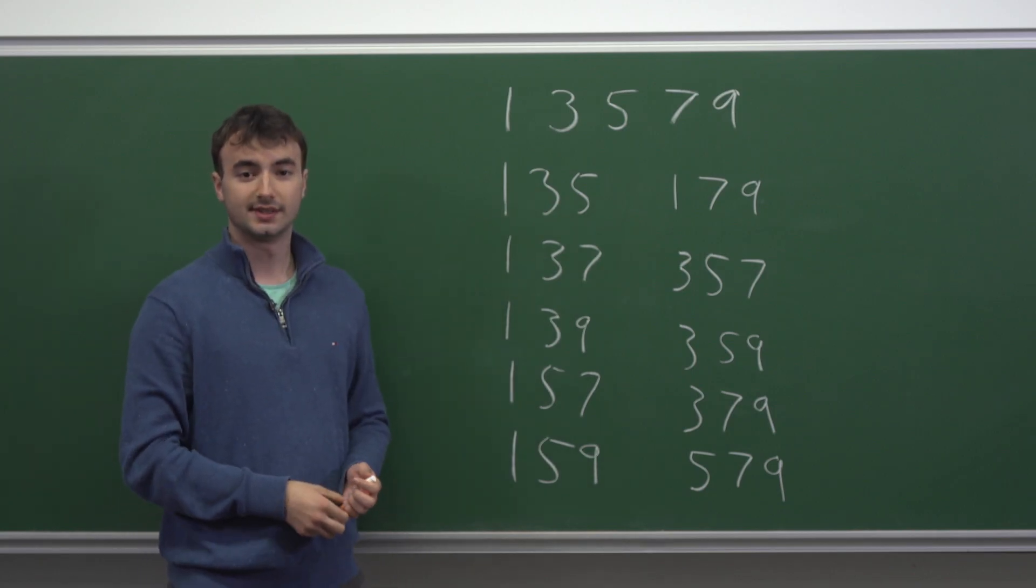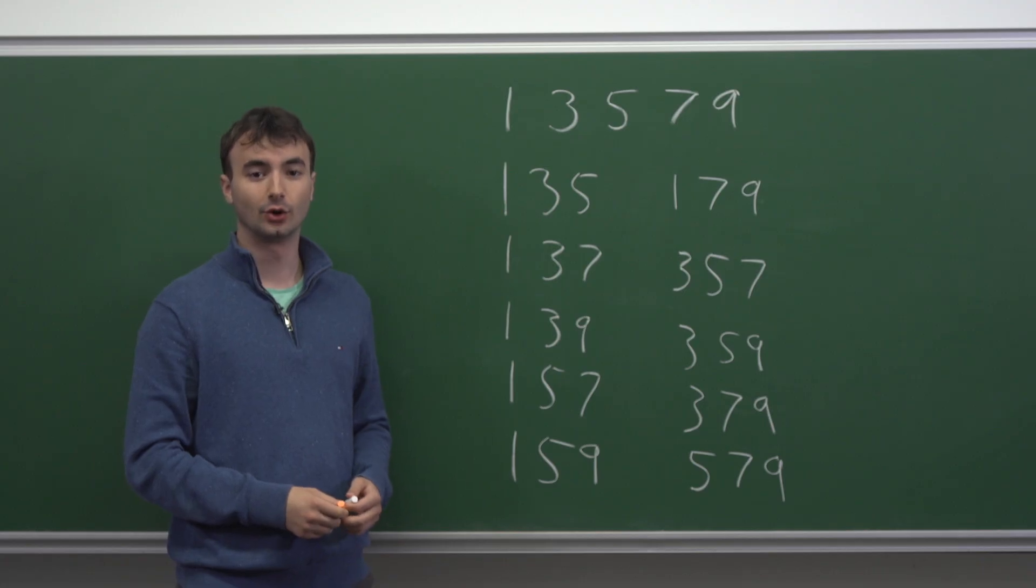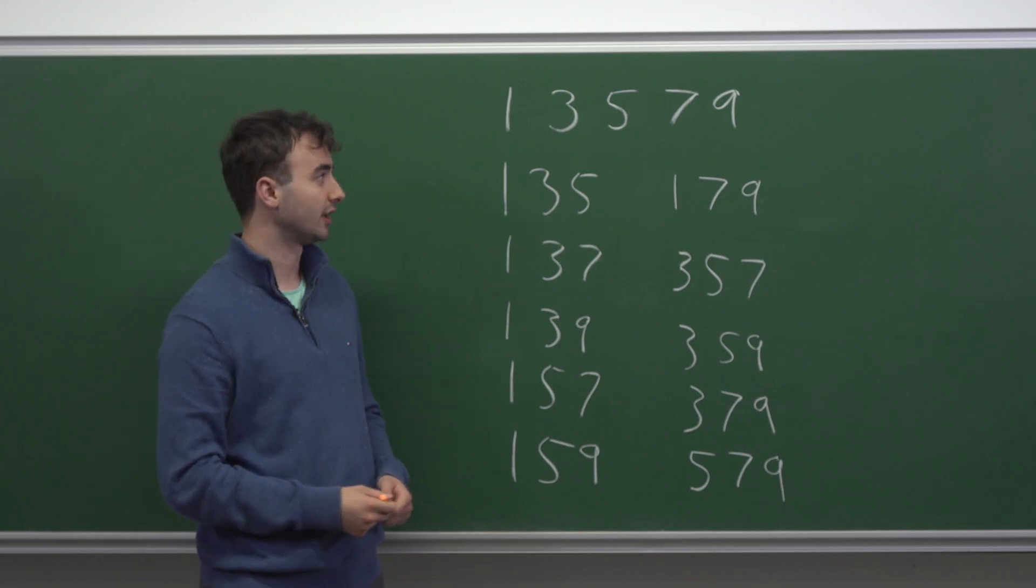So, once we're done systematically listing all of the possibilities for three different odd digits, now we look to which ones can be divisible by three. So we discussed earlier, we need to have the sum of all of these digits divisible by three. And we can check this.